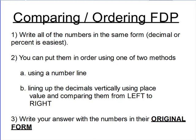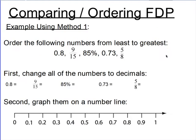Let's look at a couple of examples. For the first one, I have some numbers that I want you to put in order from least to greatest. There's eight tenths, nine fifteenths, eighty-five hundredths, seventy-three hundredths, and five eighths.